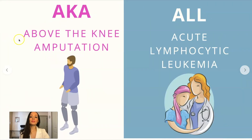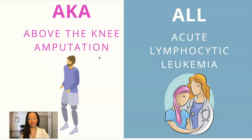AKA is above the knee amputation. Just a little pearl of wisdom — I have sometimes gone to the hospital and patients with below or above the knee amputations have had nurses charting that the dorsalis pedis is 2+ for several days. So please never copy what another nurse has charted — that's illegal. Sometimes people do do that. ALL stands for acute lymphocytic leukemia.